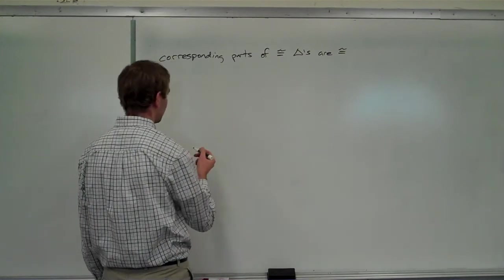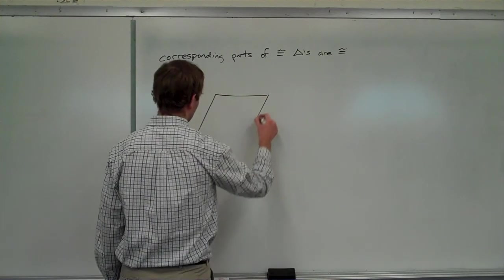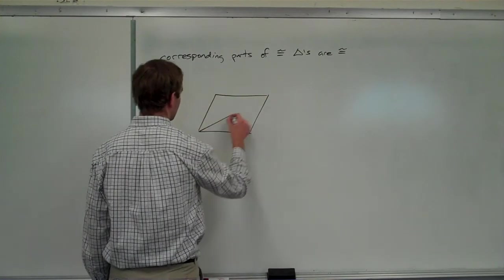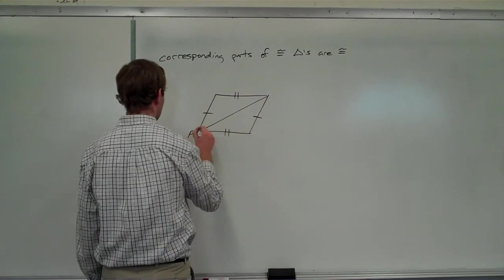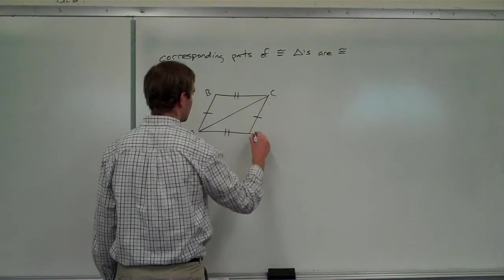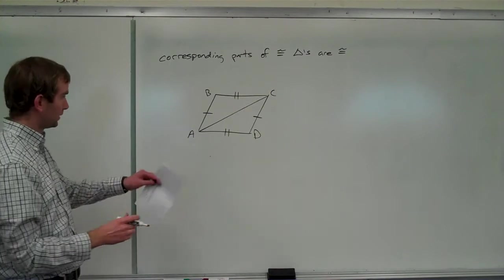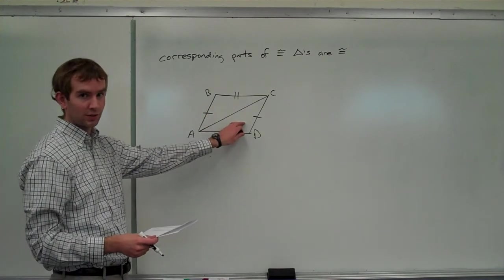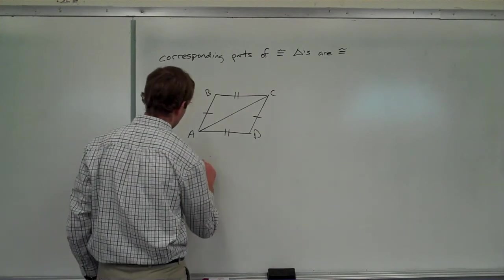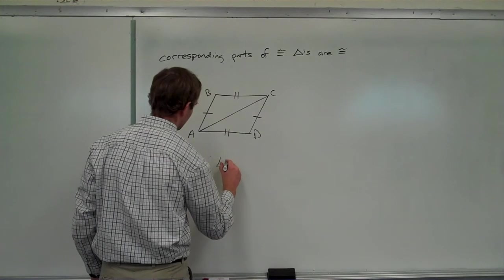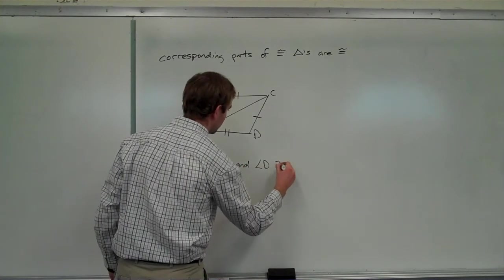If I give you a diagram, I'll say something we've seen before. I give you something that looks like this, A, B, C, D, and I want you to show me not just that these two triangles are congruent. You'll have to show me that first. But what I really want to know is are angle B and angle D congruent to each other?